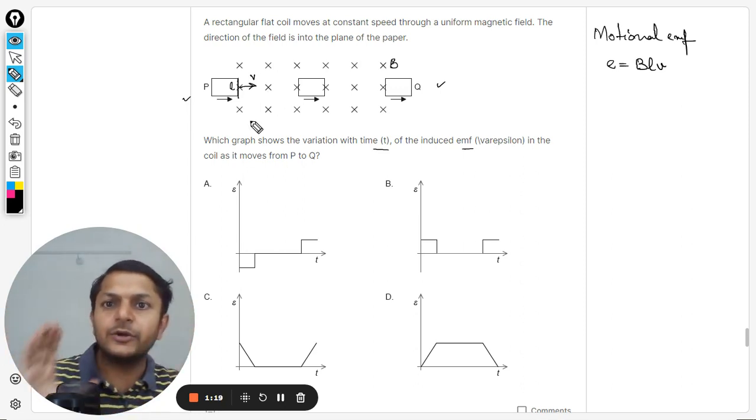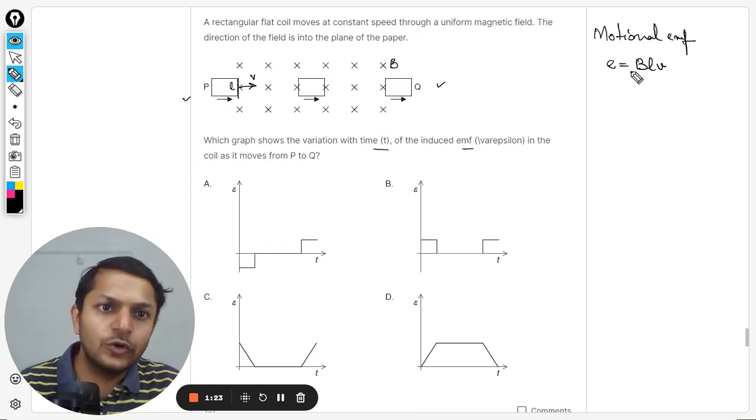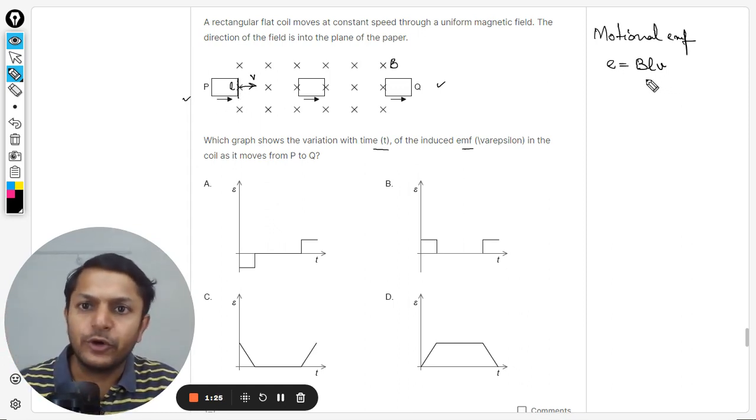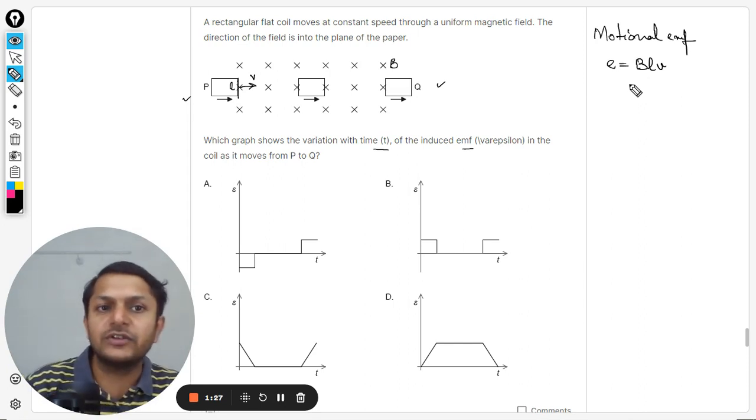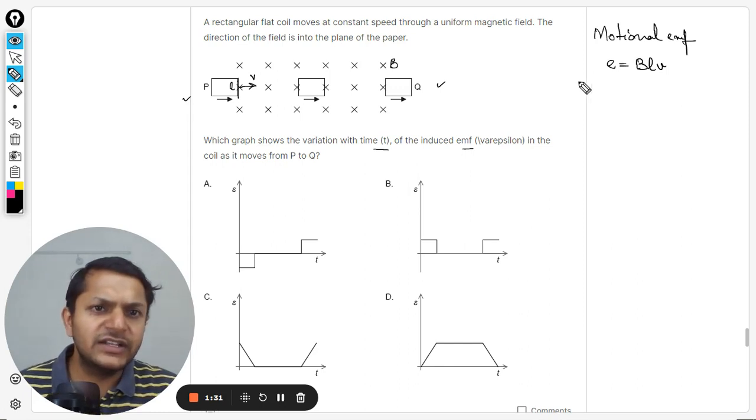Once it starts entering into it, it is now cutting the flux and so E equals BLV will be produced. Now you can take it as a positive value, you can take it as a negative value that depends upon the direction. We can just assume it to be positive.